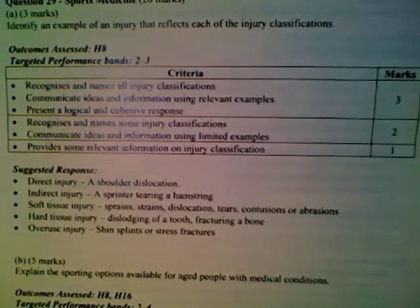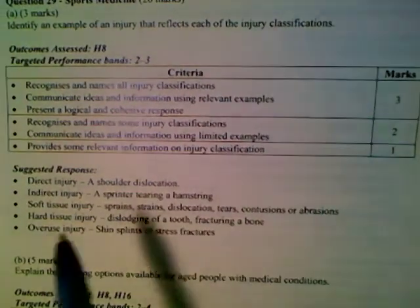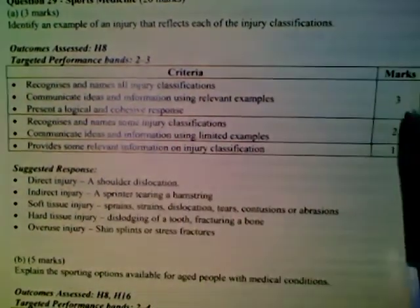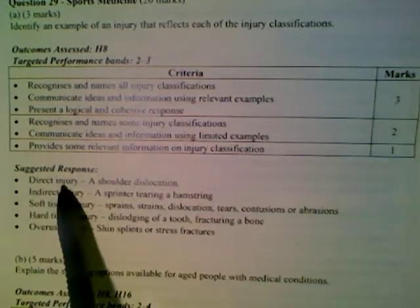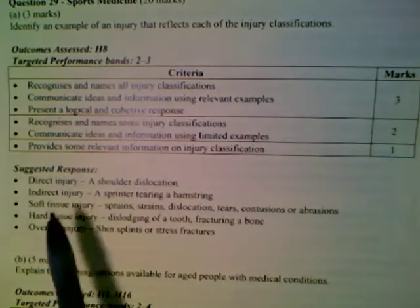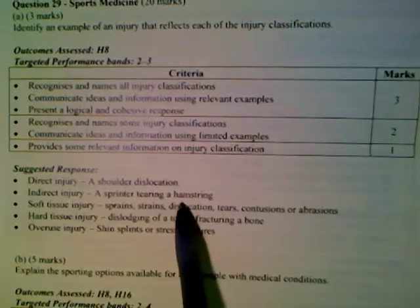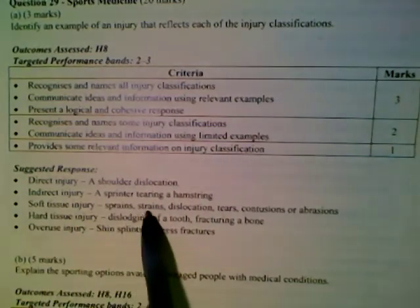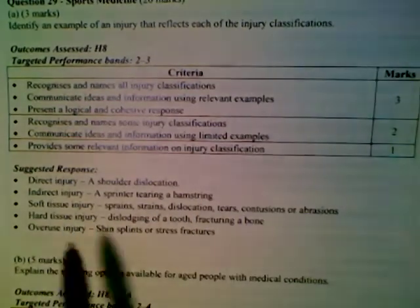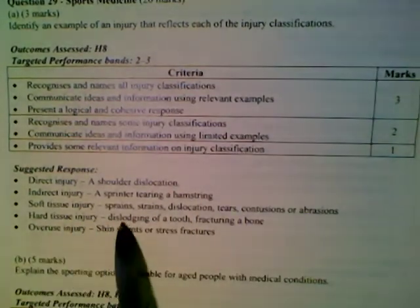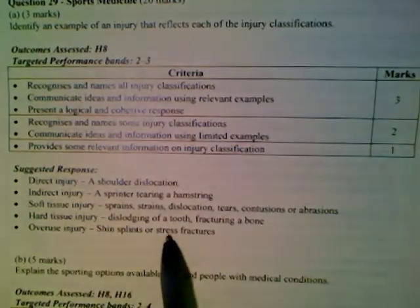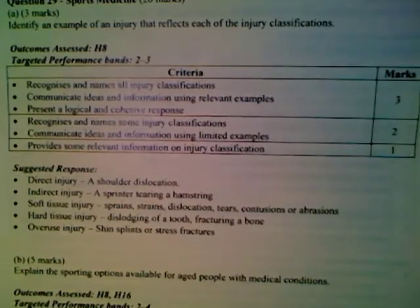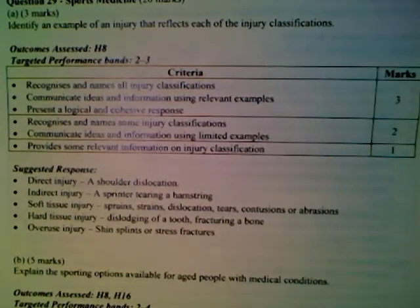Looking at the marking guidelines, covering all injury classifications gets you three out of three. Suggested responses include: direct injury — shoulder dislocation; indirect injury — a sprain or torn hamstring; soft tissue injury — sprains, strains, dislocations, or tears; hard tissue injury — dislodging a tooth or fracturing a bone; and overuse injuries — shin splints or stress fractures.